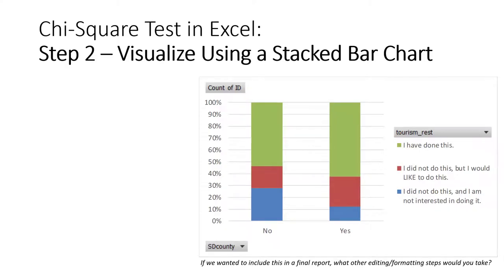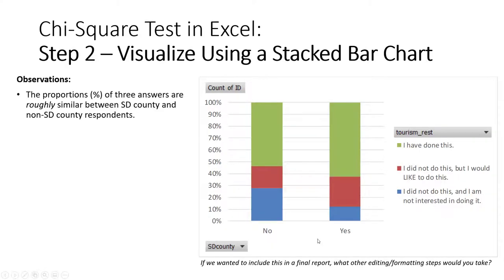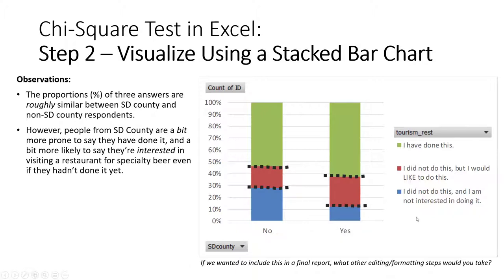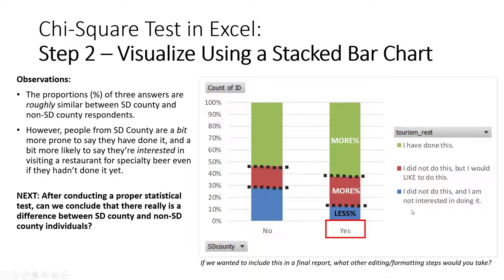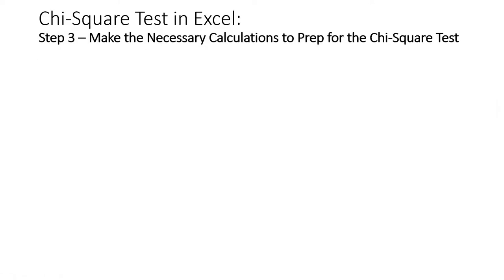Now, before we proceed, let's take a look at this stacked bar chart. The NO and YES represent people who do and do not have an affiliation with San Diego County. The proportions of their three possible answers are somewhat similar — not drastically different. However, people in San Diego County are a bit more prone to say they've actually engaged in this behavior of going to a restaurant or bar for a chase beer, and if they haven't done it, they say they're more likely to want to. The question is: can we conclude there really is a meaningful difference between these two groups?